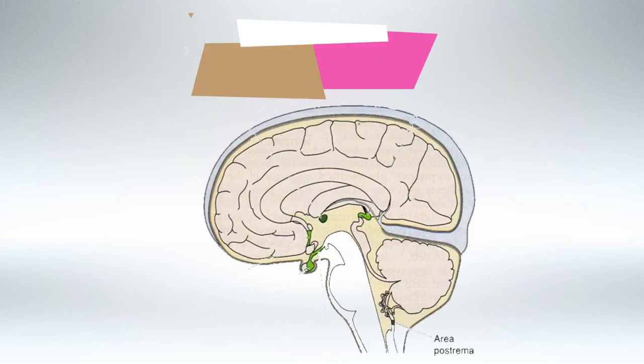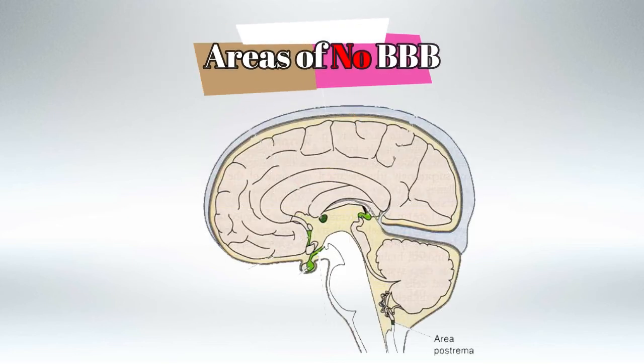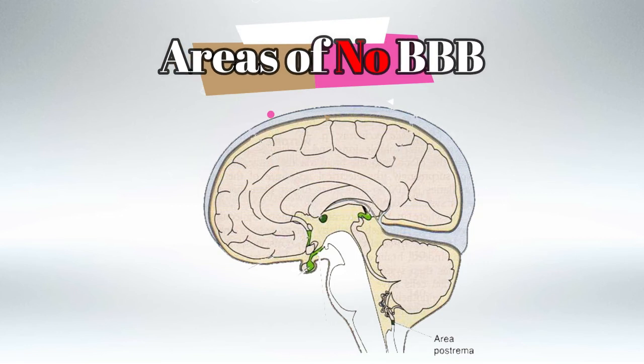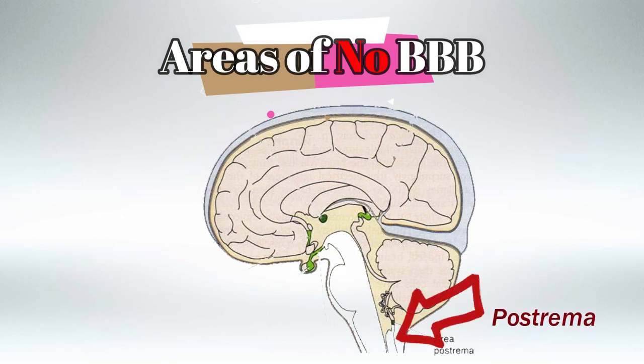The entire nervous system is never in direct contact with the blood, except for three areas. The first is the area postrema, which is in the medulla. It is responsible for nausea and vomiting in patients taking chemotherapy, because chemo will stimulate the area postrema in the medulla and induce vomiting.